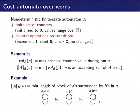For instance, here we want to compute the minimal length of a block of a's surrounded by b's. This is a nondeterministic automaton and each run computes the value of one block of a's, so the infimum of all runs will be the minimum length of a block of a's.